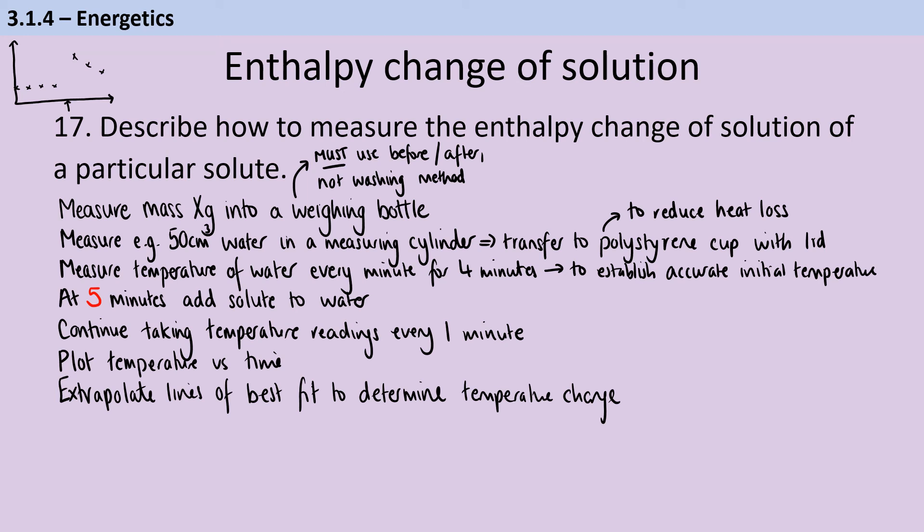You're then going to draw two lines of best fit, one through those first four points and one through the latter points. You're going to extrapolate those lines of best fit until they both go through that five minute point, and you're going to calculate the change in temperature there.